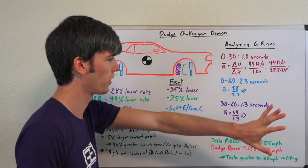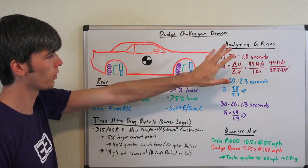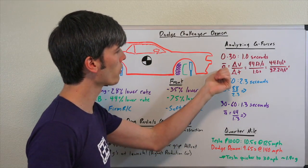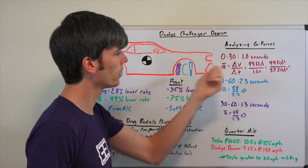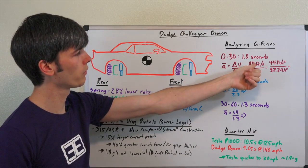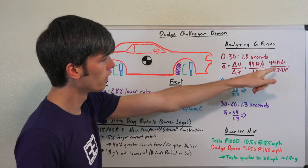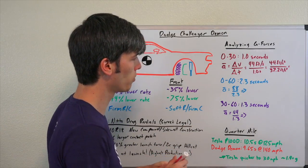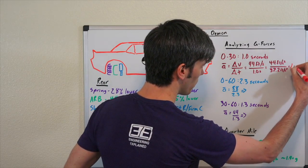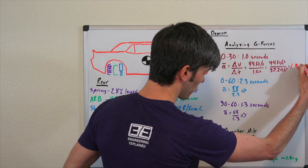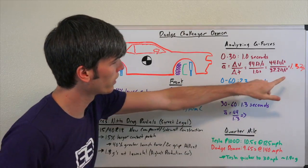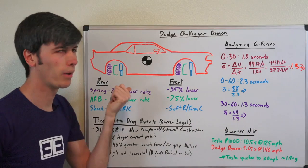Analyzing the G-forces here. Looking at the 0 to 30 time of 1 second, if we take the average acceleration, that's equal to the difference in velocity divided by how much time that takes. So 30 miles per hour equals 44 feet per second divided by 1. 44 divided by 32.2 feet per second, that gives us 1.37 G's.